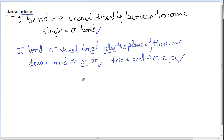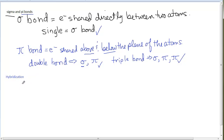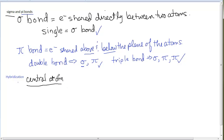Next, we want to talk about where the electrons are in terms of the orbitals that are overlapping. For that, we'll discuss hybridization theory. When something hybridizes, two things combine to make something new. Hybridization theory explains what happens to the orbitals on an atom in order to form bonds with other atoms in a molecule. We look at the central atom and discuss what its hybridization must be based on the molecule it's forming.